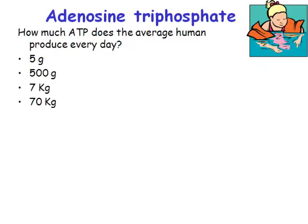So, adenosine triphosphate — let's have a little quiz. I'm sure the biochemists should know: how much adenosine triphosphate does the average human produce every day? It is in fact 70 kilograms. To be clear, you don't have 70 kilograms of ATP in your body at the moment, but you are continually recycling the ADP and the phosphate, and during the course of a day you will generate 70 kilograms of ATP and consume 70 kilograms of ATP.